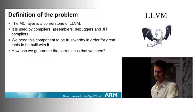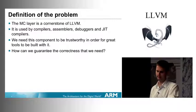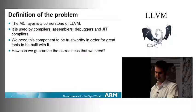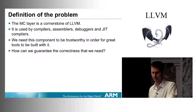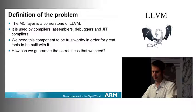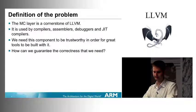MC is pretty much a cornerstone of all LLVM code generation tools — your compilers, assemblers, debuggers, and JIT tools, which Eli talked about in the last presentation. We need this component to be trustworthy in order to build great tools with it. We at ARM are interested in guaranteeing that correctness.